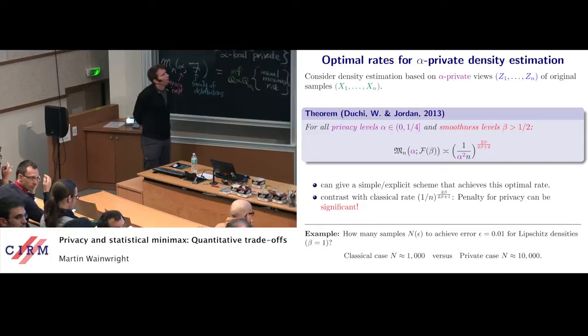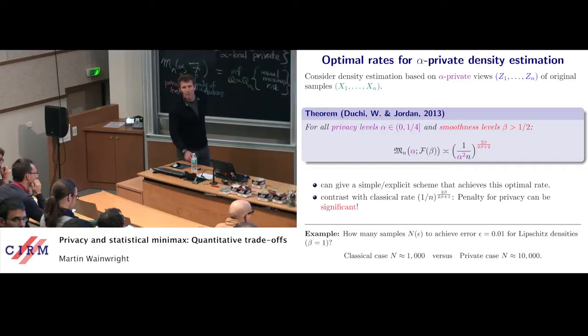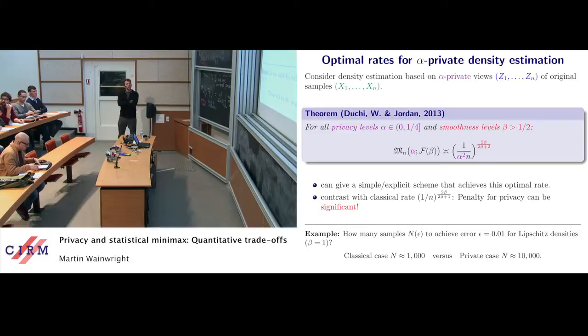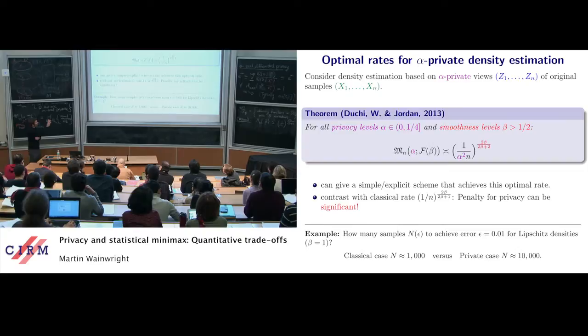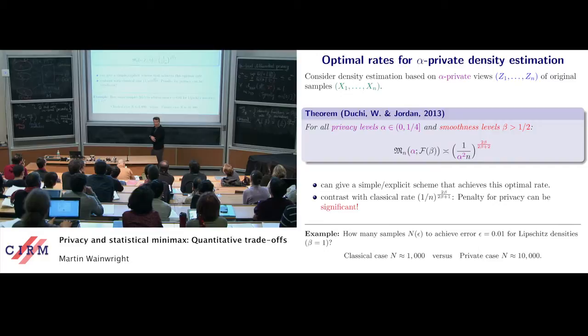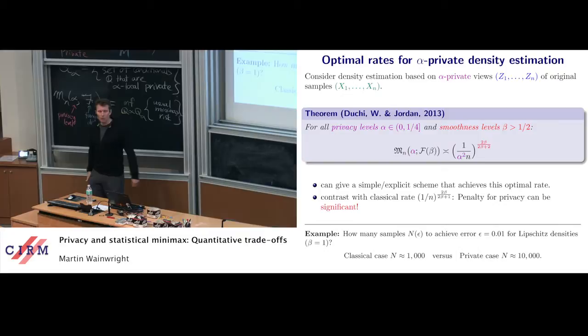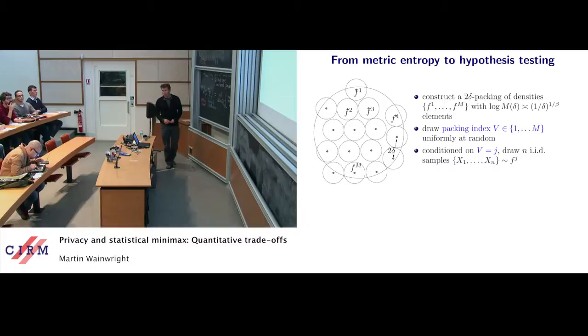There was a question: is that rate coming from adding noise directly to the data? Because it looks like the rate you'd get from a nonparametric deconvolution problem. It's similar but not the same. One mechanism — the most natural — would be to add noise directly to the data, and then the problem becomes nonparametric density estimation with deconvolution. But we can show that's not an optimal mechanism. Laplace noise on the data is highly suboptimal.